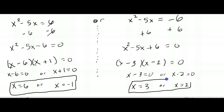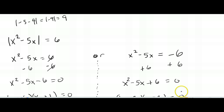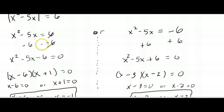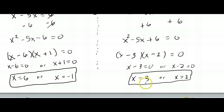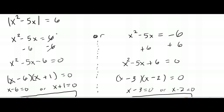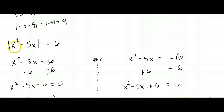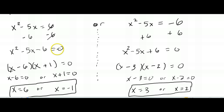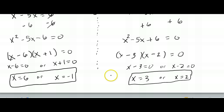So all four values — 6, negative 1, 3, and 2 — are solutions to the original equation: the absolute value of x squared minus 5x equals 6. We could plug each one in to verify. For instance, 3 squared is 9, minus 5 times 3 is 15, so 9 minus 15 is negative 6, and the absolute value of negative 6 is 6. Plugging in negative 1: negative 1 squared is 1, minus 5 times negative 1 is plus 5, so 1 plus 5 is 6, and the absolute value of 6 is 6. All four solutions check out.